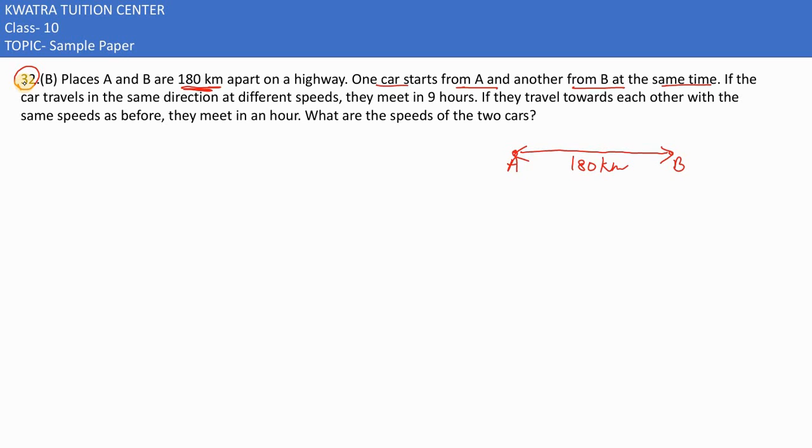In the first situation, there is also a car at B. If the cars travel in the same direction at different speeds, they meet in 9 hours. This means one car is here and the other car is here, same direction but different speeds. Whenever cars are moving in the same direction, you need to subtract the distance.